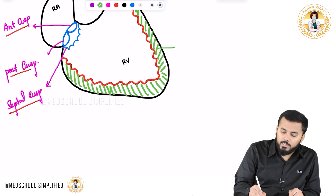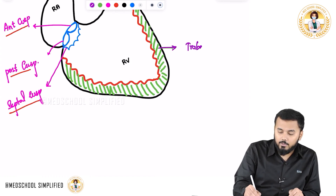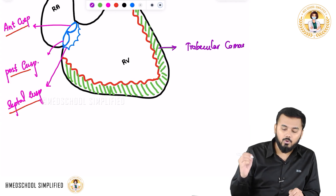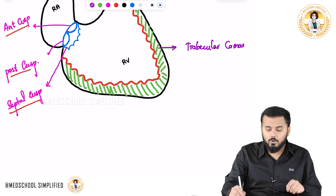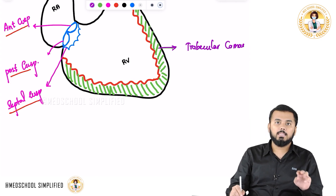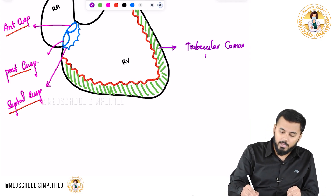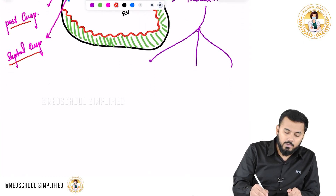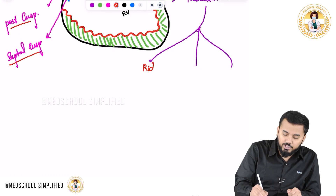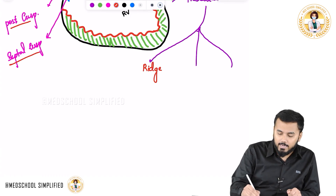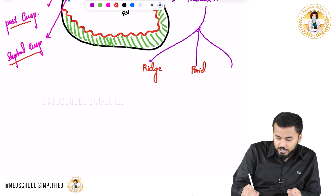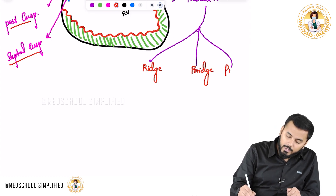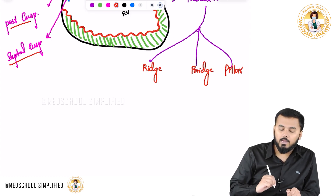These muscles are in the form of trabeculae, which is why you call them as trabecular carnae. There are three different types of trabecular carnae: one is the ridge-shaped trabecular carnae, another is the bridge-shaped trabecular carnae, and another is the pillar-shaped trabecular carnae.